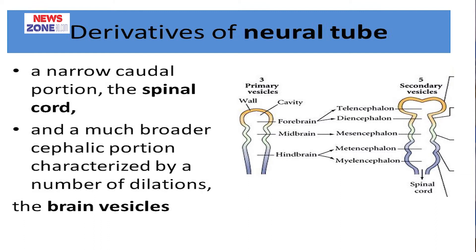The three most cephalic vesicles are: the forebrain or prosencephalon, the midbrain or mesencephalon, and the hindbrain or rhombencephalon. The prosencephalon differentiates into telencephalon and diencephalon. The midbrain does not differentiate — it remains the mesencephalon. The rhombencephalon differentiates into metencephalon and myelencephalon. The most caudal is the spinal cord.